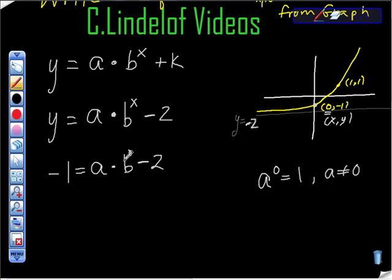But there's nothing that makes me think that b is 0, because we know by definition it's got to be greater than 0. So look what we have. We have -1 is equal to a times b to the 0, so b to the 0 is equal to 1 because we know that b must be greater than 0, so it can't be 0.